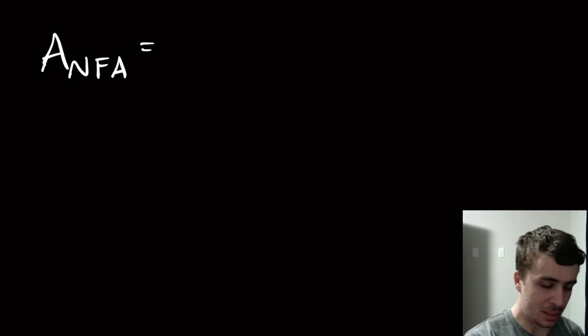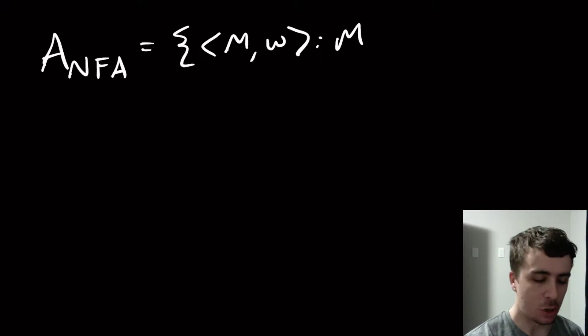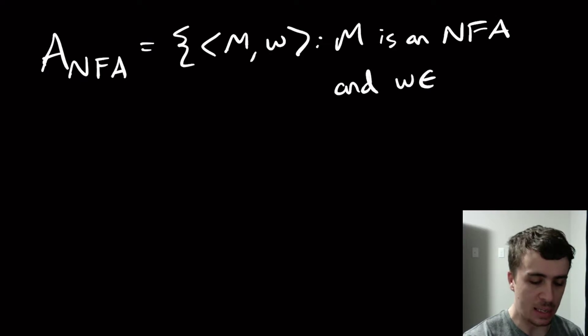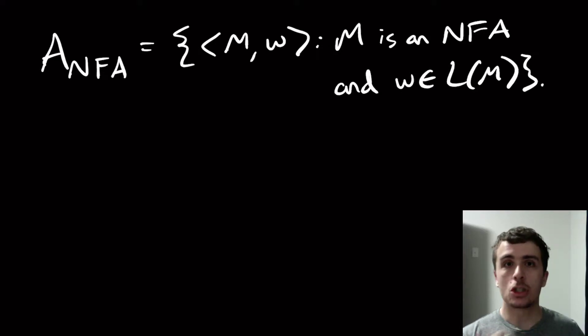So it's a very similar setup. We have a machine in an input, but now the machine is an NFA and W is in the language of N. So we can't just use the same idea as before, just simulate the machine on that input because we have different choices here.